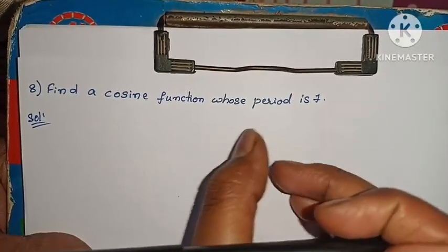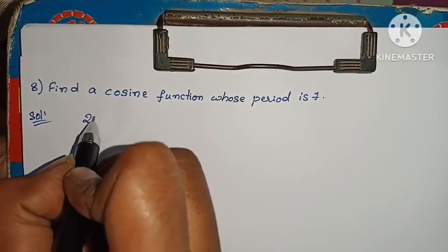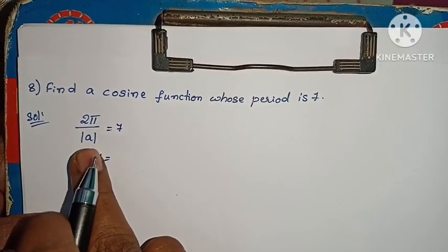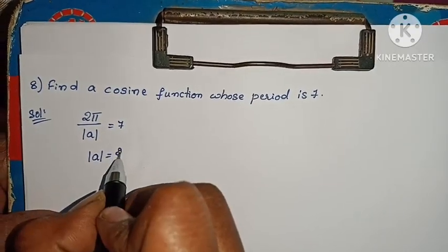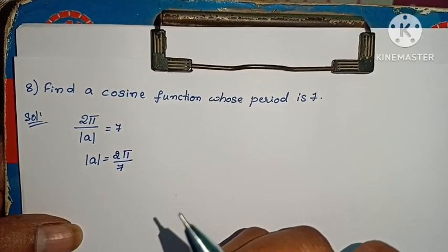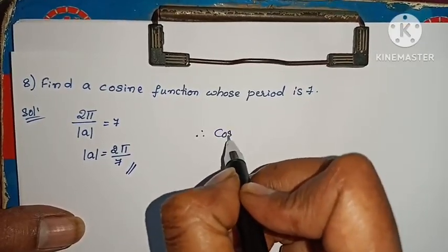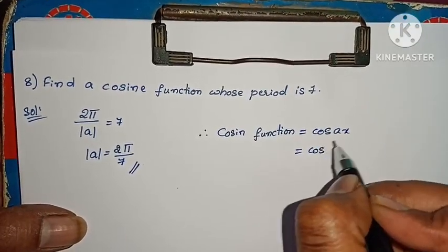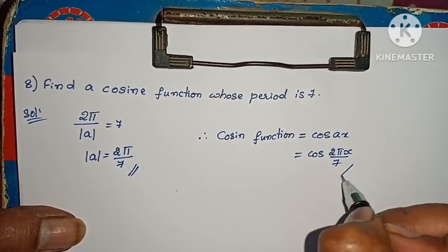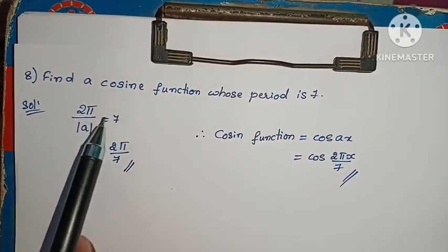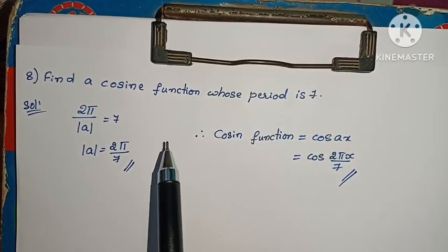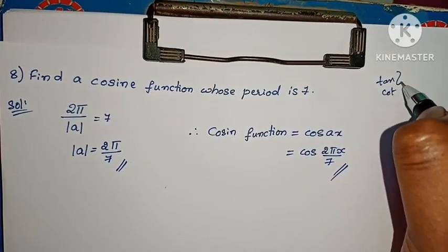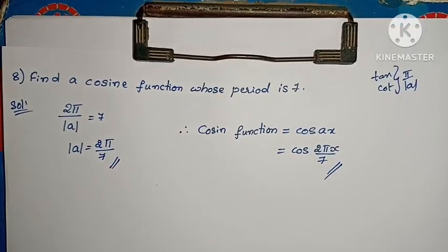Find a cosine function whose period is 7. For cosine, the period formula is 2π/|k| = 7. So |k| = 2π/7. Therefore the cosine function is f(x) = cos(2πx/7). Remember: for sine and cosine, the period is 2π/|k|; for tan and cot, the period is π/|k|; for secant and cosecant, the period is also 2π/|k|.